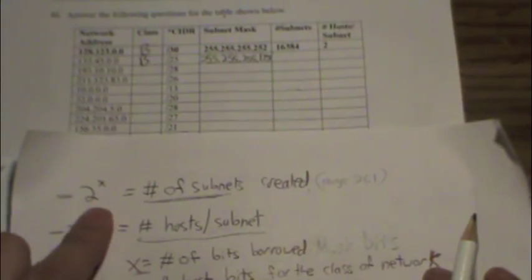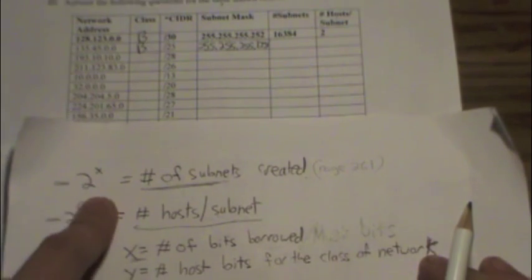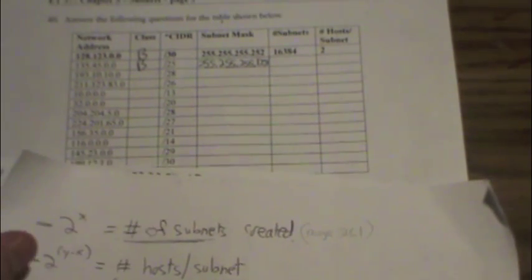And how do we get the number of subnets? So we have to solve for x. So 2 to the x equals the number of subnets, which is here. So it looks like we need to find x. So how many bits did we borrow? This is where it might start to get a little tricky for you.